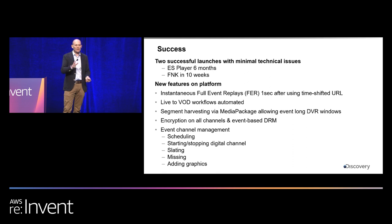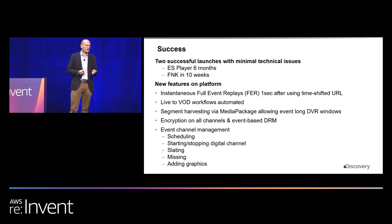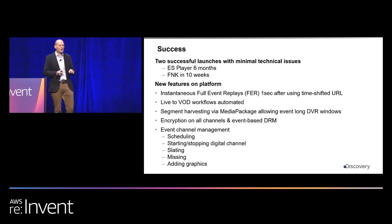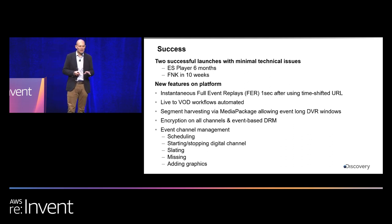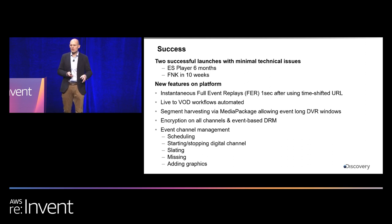Key successes: we created a full Eurosport player workflow in six months to meet very aggressive deadlines. Food Network Kitchen was developed and delivered in ten weeks. Both are in production. Full event replays, live-to-VOD, and segment harvesting are incredible improvements on our previous OTT deliverables. Encryption and event-based DRM are now fairly standard with the API interface. Event channel management — scheduling, slating, starting, and stopping digital channels — is also working well.